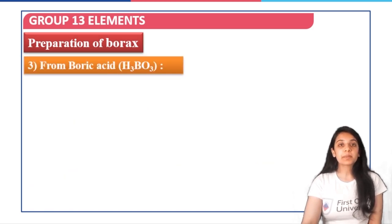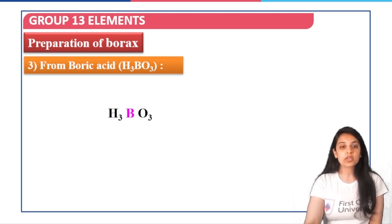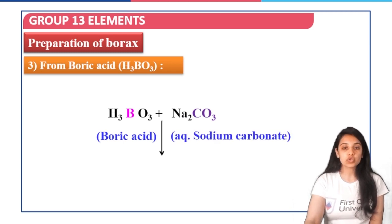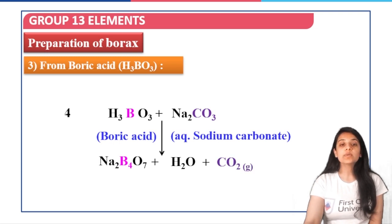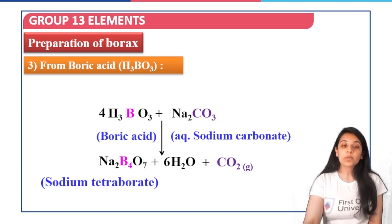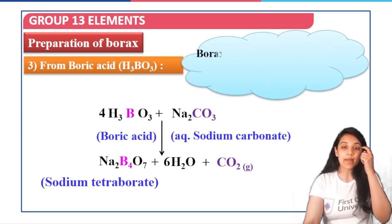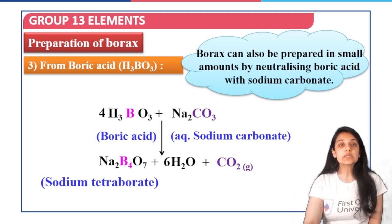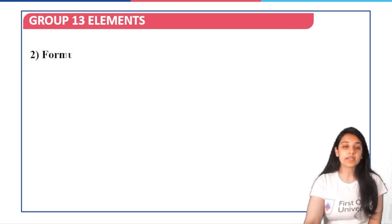The third method of preparation is from boric acid, H3BO3. When H3BO3 is reacted with aqueous sodium carbonate solution, sodium tetraborate (Na2B4O7), water, and CO2 are produced. Pure borax can then be obtained, and borax can also be prepared in small amounts by neutralizing boric acid with sodium carbonate.